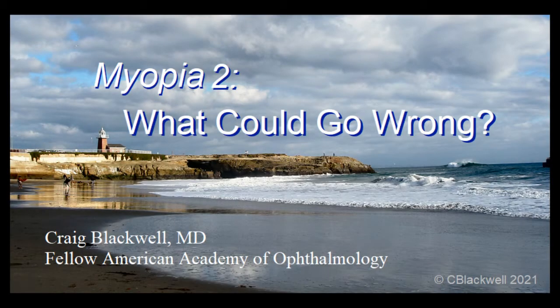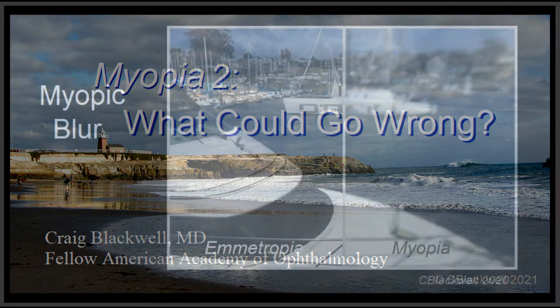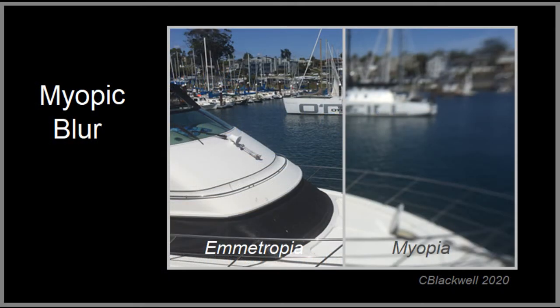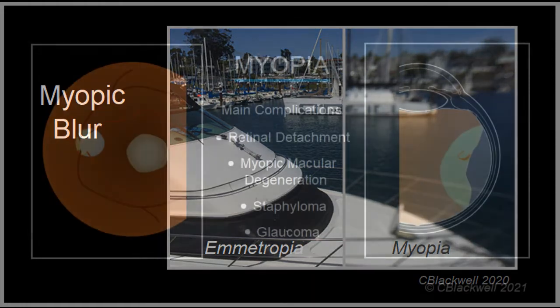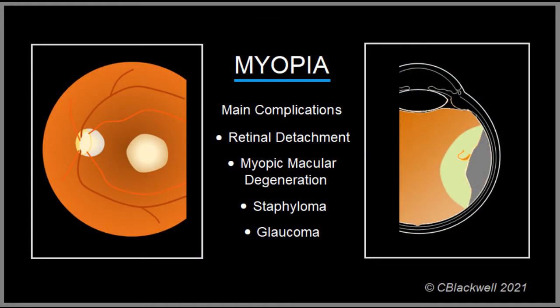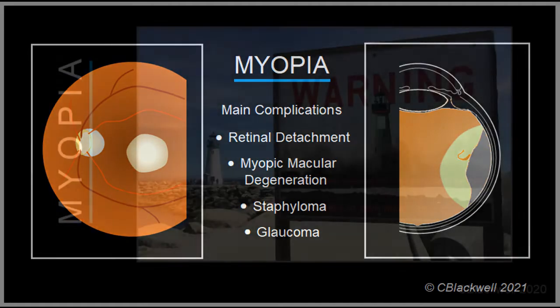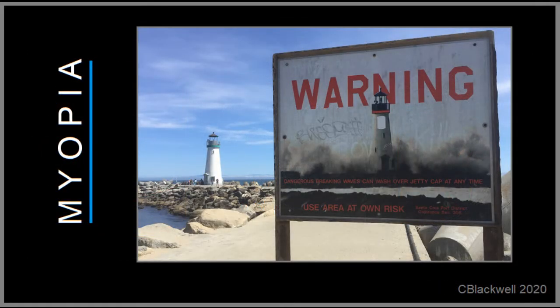This is video number two in our series about myopia, covering potential complications that can threaten vision. Myopia has long been recognized as a cause of blurred distance vision, but it is being increasingly recognized for risk of complications which can result in vision loss — for example, retinal detachment and myopic macular degeneration. Because the blurred vision of common myopia is corrected by simple measures like glasses or contacts, it is generally underestimated as a cause of vision loss.